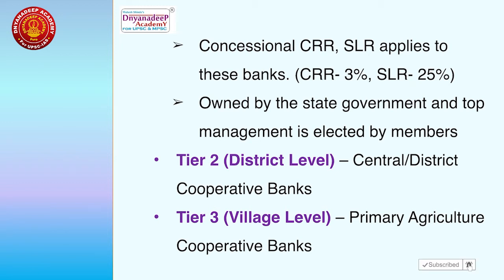The second tier is at the district level — District Central Cooperative Banks. The third tier is at the village level, which involves Primary Agricultural Cooperative Banks or Primary Agricultural Cooperative Societies. Top management is elected by members of the lower-level societies.